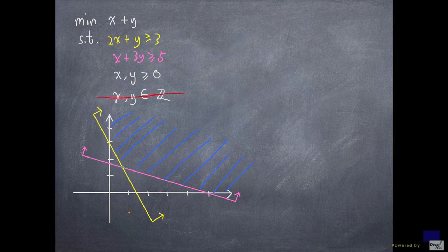And this point is the intersection of the lines 2x plus y equal to 3 and x plus 3y equal to 5. That gives us the point 4 over 5 comma 7 over 5.